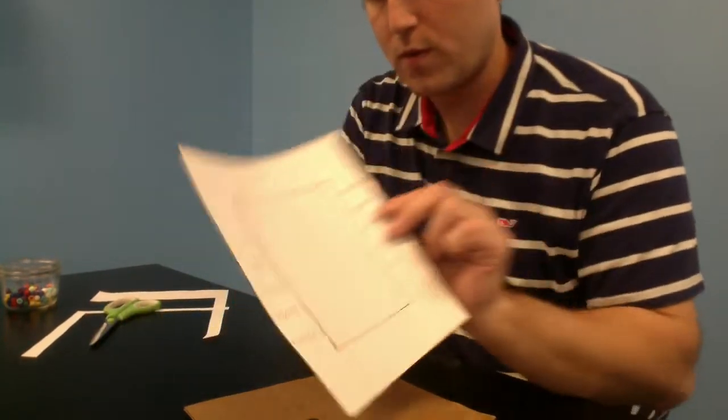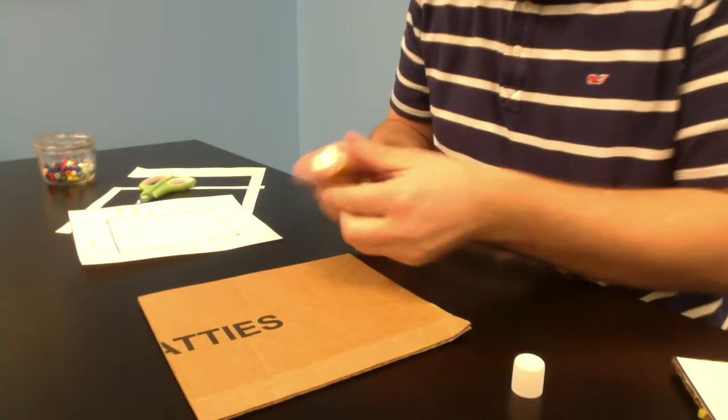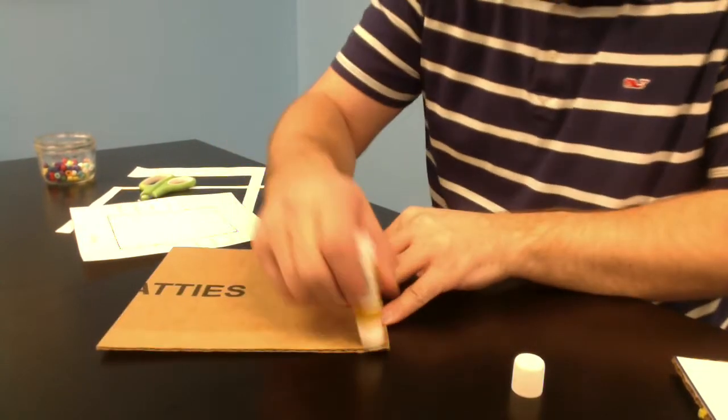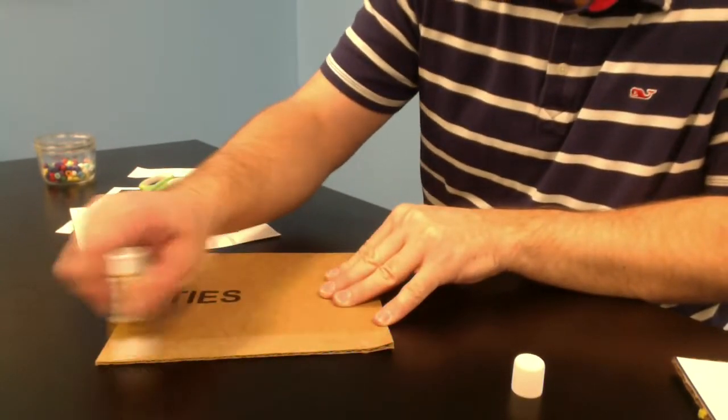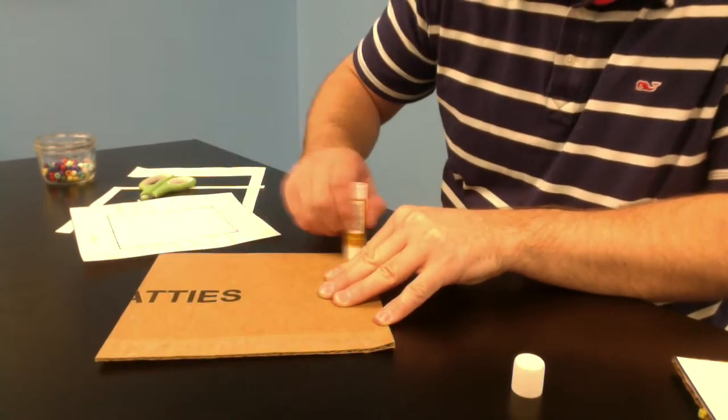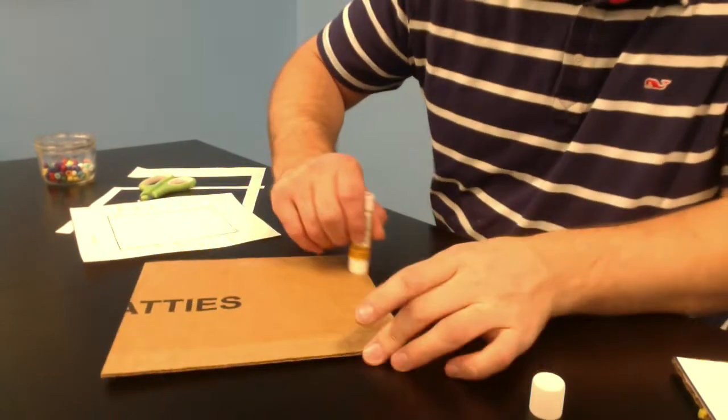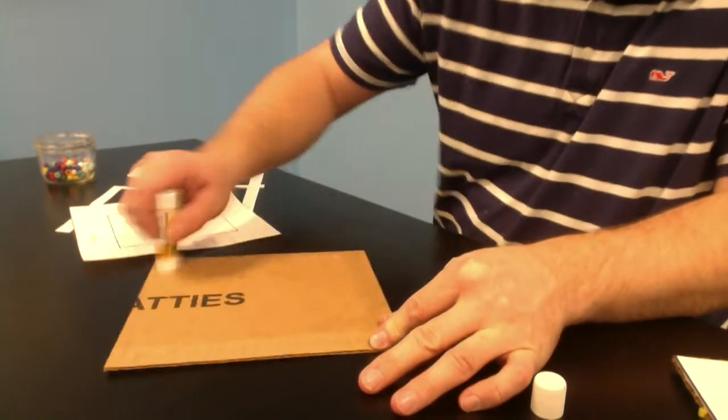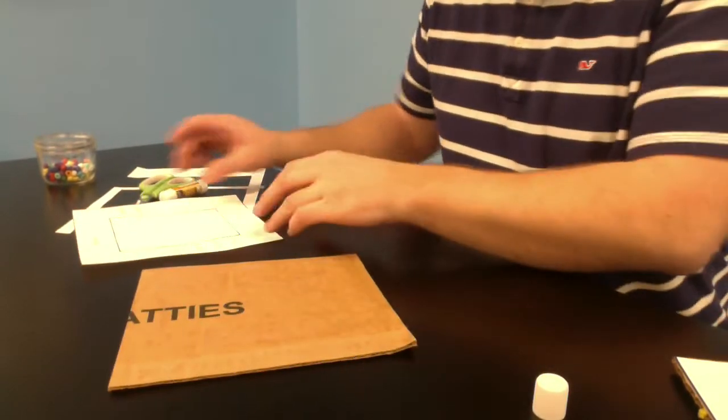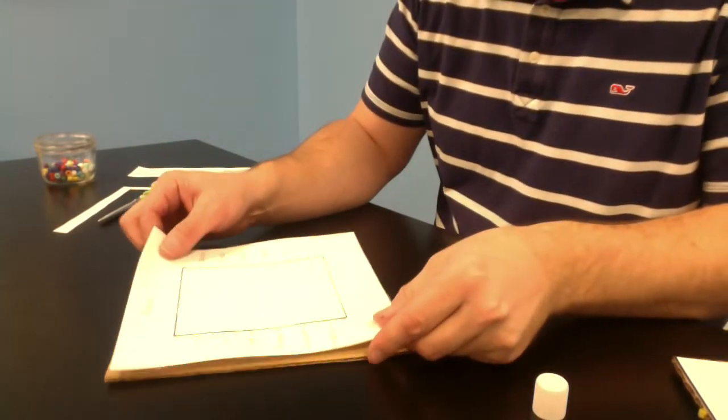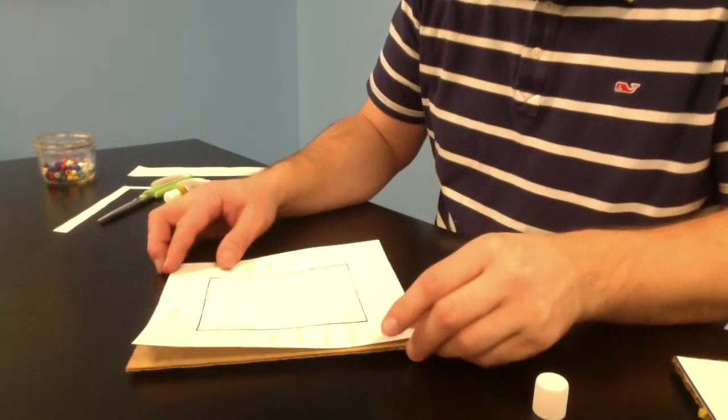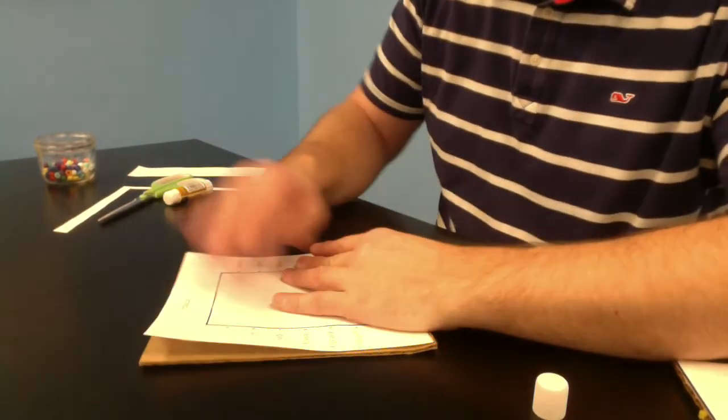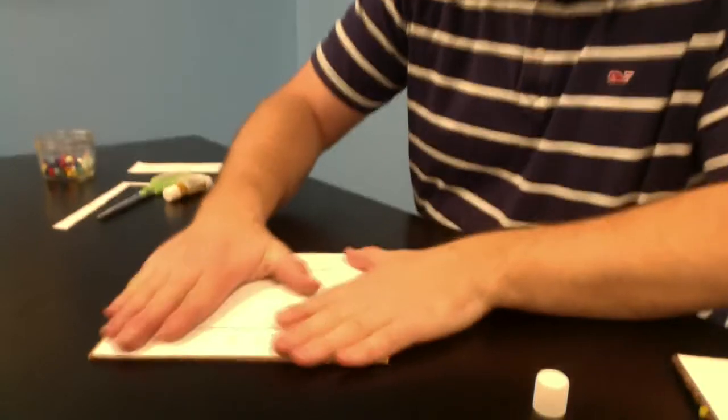Once you have this, you're going to put some glue with your glue stick down on your cardboard. Make sure you get the edges and corners, those are the most important parts. Then you're going to put your template right on top.